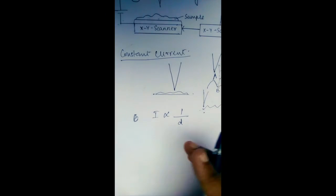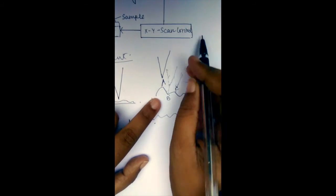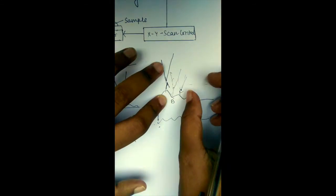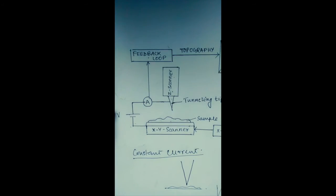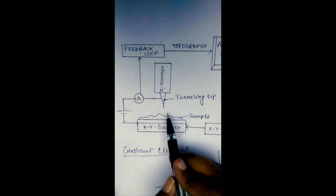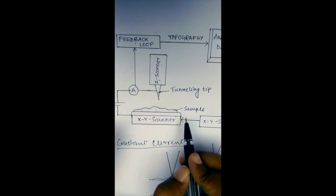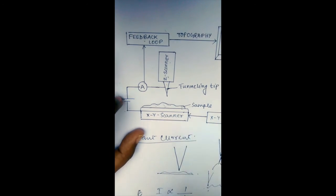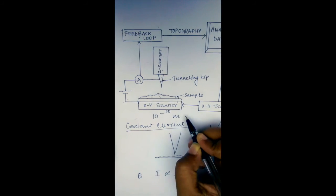In the constant current mode, the current is kept constant while the tunneling tip moves up and down across the surface, and its motion is scanned and sent to the feedback loop. Regarding sample requirements, since the electron is tunneling through the sample to the tip, the surface must be conducting. Biological samples usually cannot be used in a scanning tunneling microscope, but for physics and chemistry purposes it can measure dimensions up to 10 to the power of minus 10 meters, which is one Angstrom.